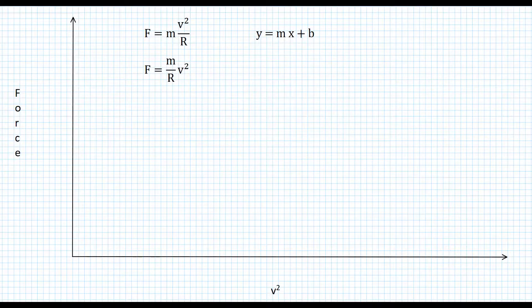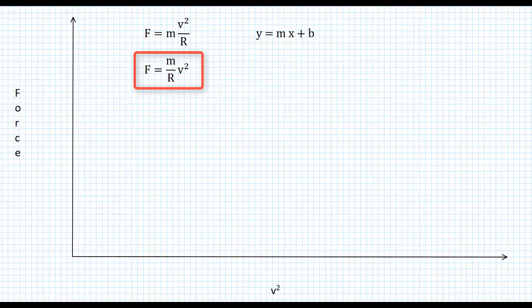We want our equation, F equals mv squared over r, to look like this equation of a line, y equals mx plus b. And it's pretty close now. I'm just going to move the r from under the v squared to under the m. It's the same exact equation.